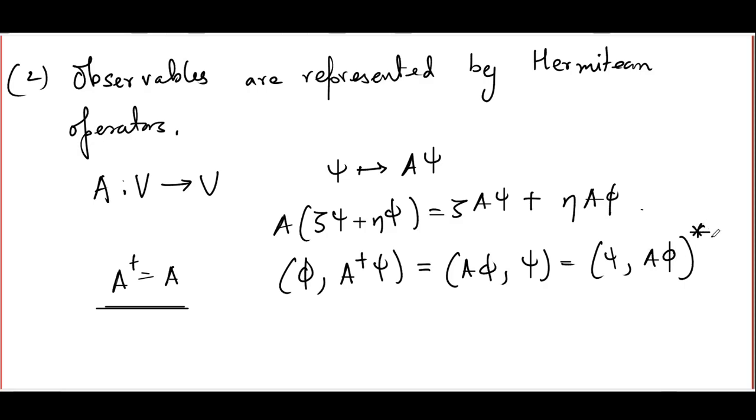So what we are demanding here is that A dagger equals A, so that means for a Hermitian operator, phi A psi is psi A phi star. That is, this operator, which would have been A dagger, is the same as A, called Hermitian in this case.